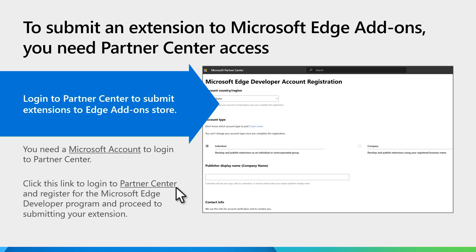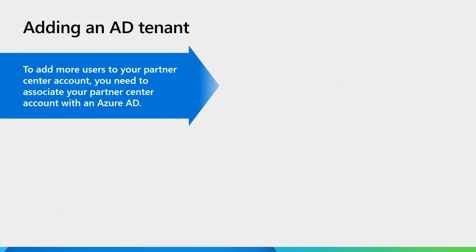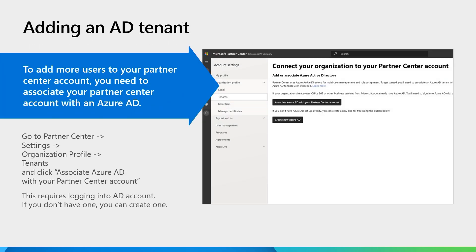In future, we're looking to allow you to register using your work accounts directly. The next step after you've logged into the Partner Center and registered for the Microsoft Edge add-ons program is to add your Azure AD tenant and link it to your MSA account. For that, you need to go to the Partner Center, go to Settings, go to Organizational Profile, go to Tenants, and click Associate Azure AD with your Partner Center account, then follow the steps to link your AD account to your MSA account.